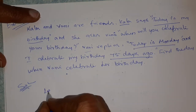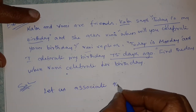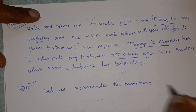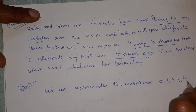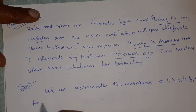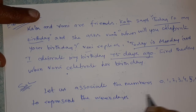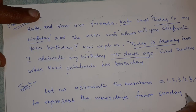Let us associate the numbers 0, 1, 2, 3, 4, 5, 6 to represent the weekdays from Sunday to Saturday respectively.